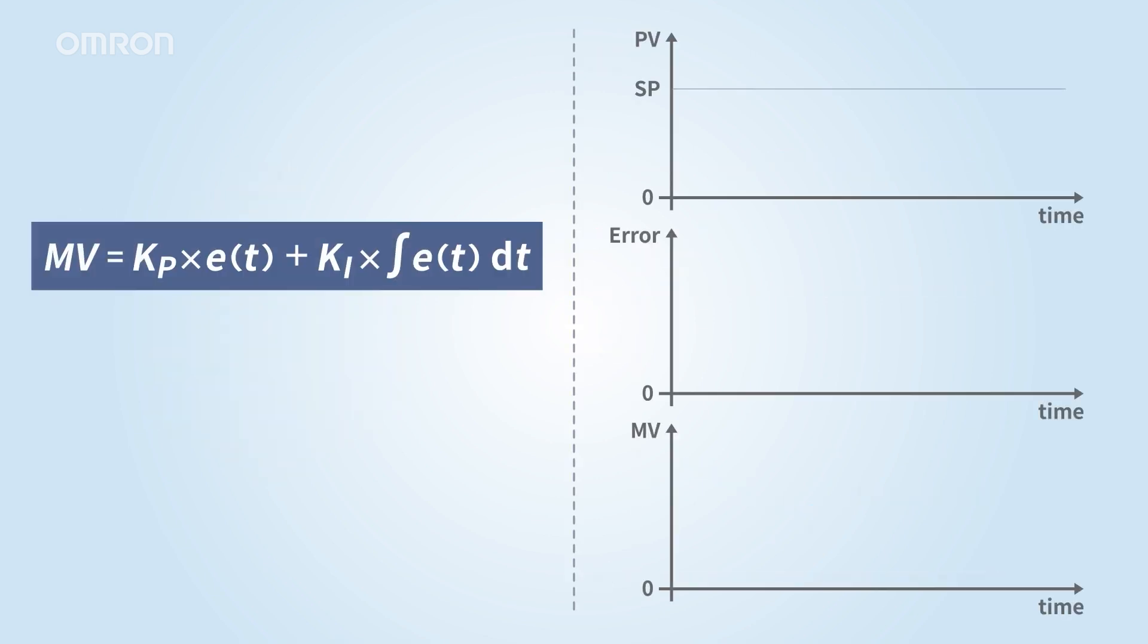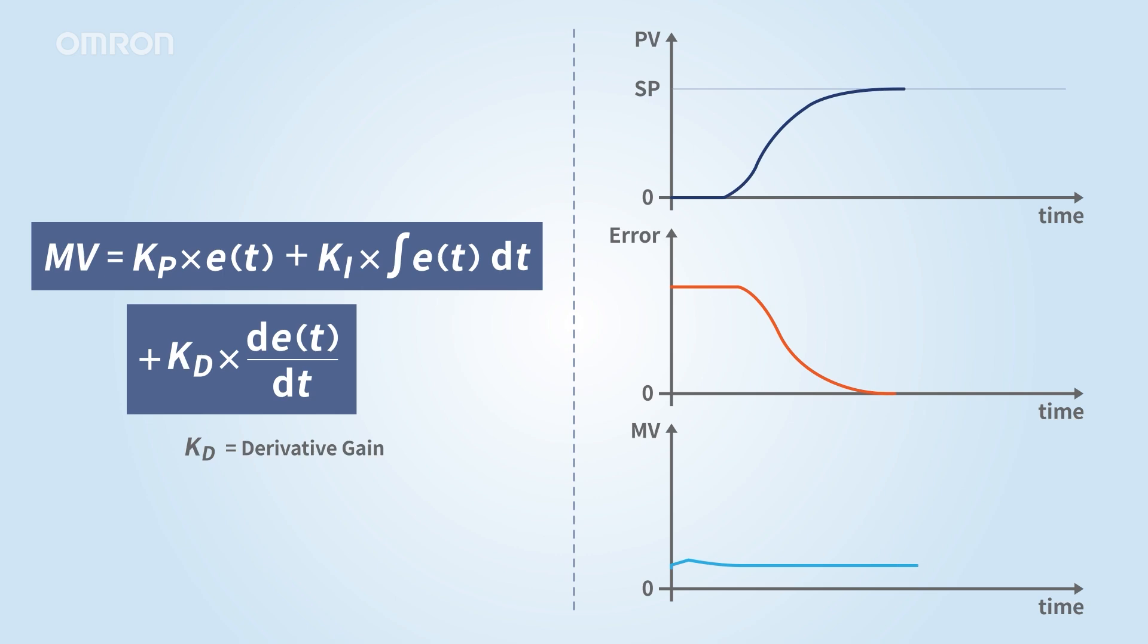To address this issue, derivative control adjusts the output based on the rate of change and deviation. As the temperature nears the set point, derivative action becomes negative, acting as a brake. When it falls below, it turns positive, acting as an accelerator. Using derivative control within full PID enables stable temperature control, even with dead time.